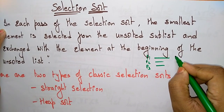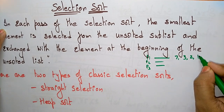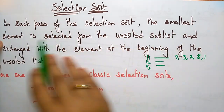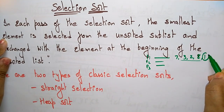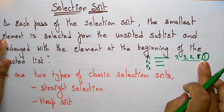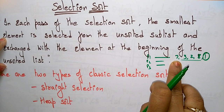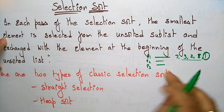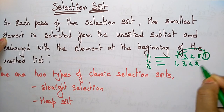Suppose here I have taken the initial array as 7, 3, 2, 1 — or let me take 8, 1. It is in unsorted order. So in each pass of the selection sort, the smallest element is selected from the unsorted list. In this unsorted list, what is the smallest element? Select the smallest element and exchange with the element at the beginning of the unsorted list. So in the next pass I am just exchanging that — 1, 3, 2, 8, 7.